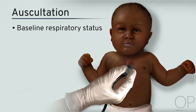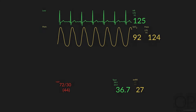The auscultation of the chest should focus on the baseline respiratory status and any evidence of aspiration. The typical machine-like continuous murmur of a patent ductus arteriosus is expected — if not hoped for — in a neonate with severe Tetralogy of Fallot. The vital signs should be noted. With the PDA present, oxygen saturations should be in the high 80s to low 90s, and the remainder of vitals should be normal in a non-agitated infant.